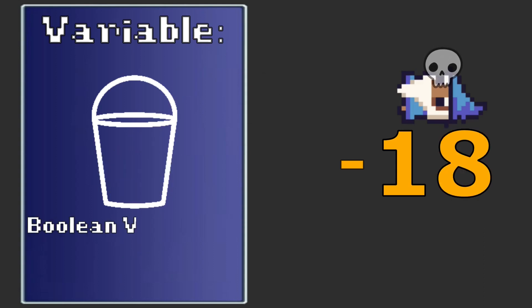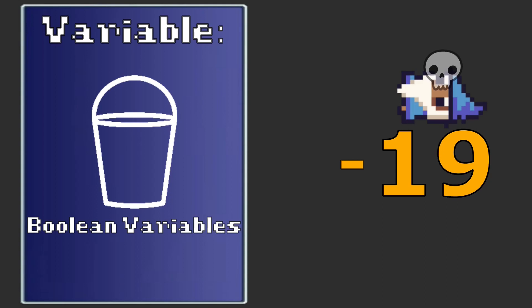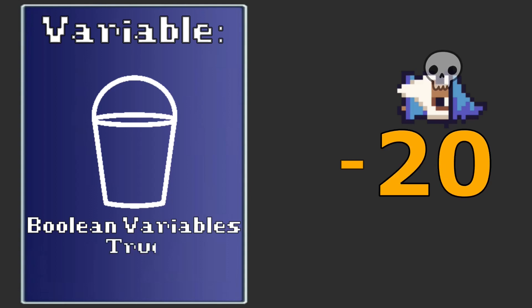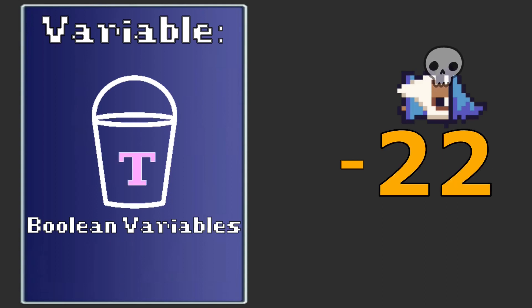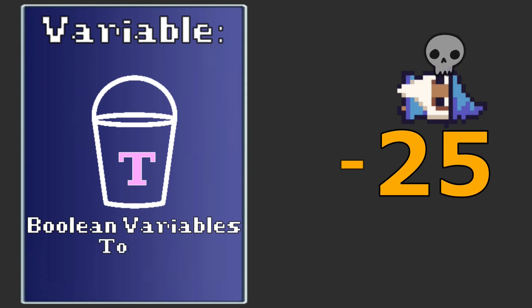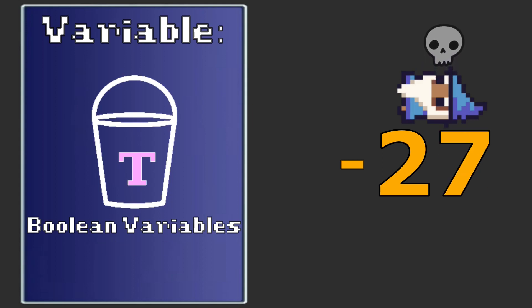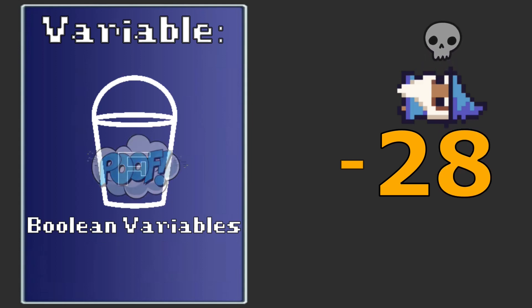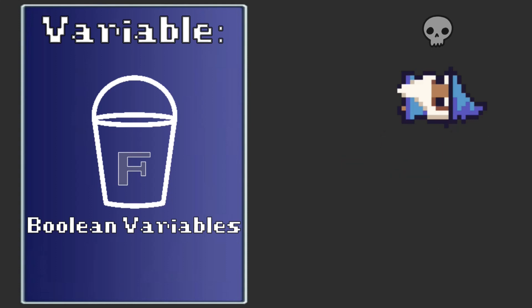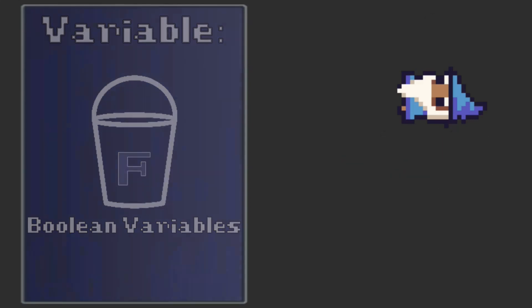Finally, we have Boolean variables. These guardians of truth hold the value of true or false. And the beauty of Booleans is we can toggle between them effortlessly, without even knowing their current value. And now that you're armed with this newfound knowledge, let's see how we can go ahead and implement variables.